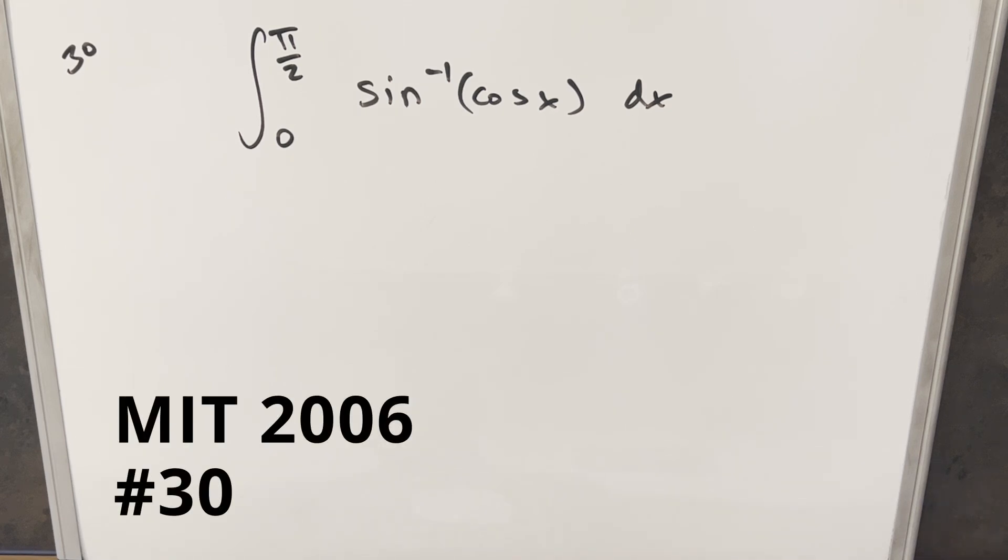Okay, we have another integral. This one's from the MIT integration B 2006, number 30. We've got the integral from 0 to pi over 2, arcsine cosine x, dx.